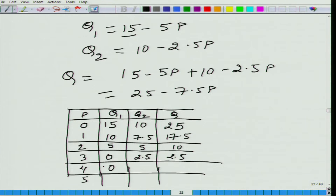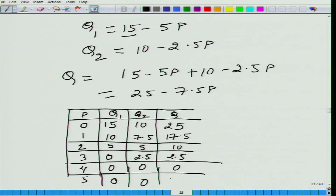When price is 3, Q1 = 0 and Q2 = 0, so total is 0. When price is 4 or 5, total demand is also 0.